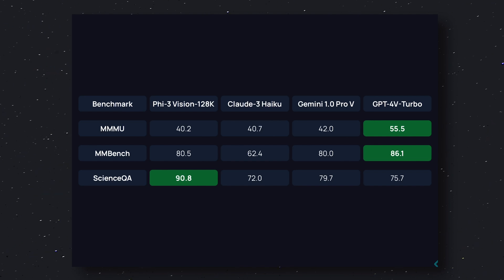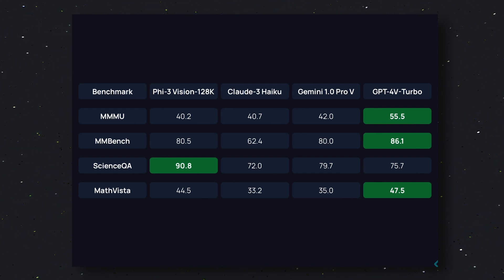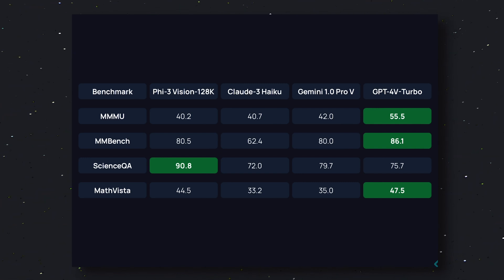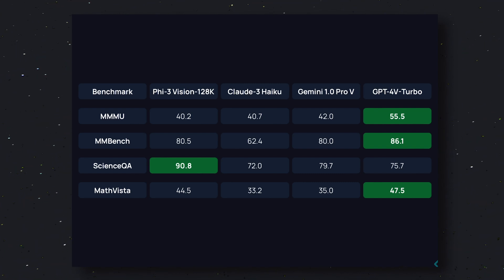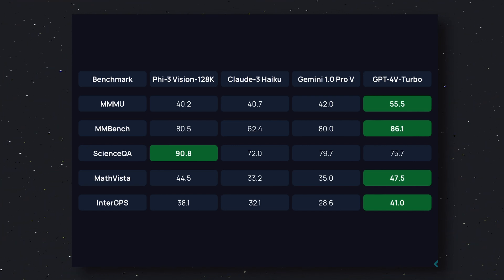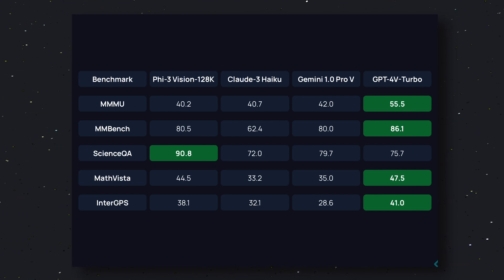The next benchmark is the MathVista benchmark — a mathematical benchmark. In this benchmark, it scores 44.5, while Claude 3 Haiku scores 33.2, Gemini 1.0 Pro scores 35.0, and GPT-4V Turbo scores 47.5. So it beats Claude 3 Haiku and Gemini, but it couldn't beat GPT-4V. Considering its size, it's pretty amazing. The next benchmark is InterGPS, a dataset of geometry problems. Here it scores 38.1, while Claude 3 Haiku scores 32.1, Gemini 1.0 Pro scores 28.6, and GPT-4V Turbo scores 41.0 — so it beats Claude 3 and Gemini, but still couldn't beat GPT-4V.